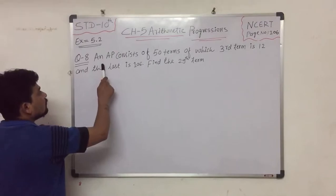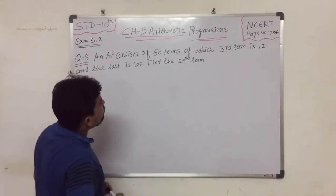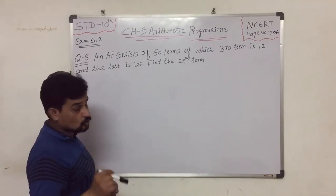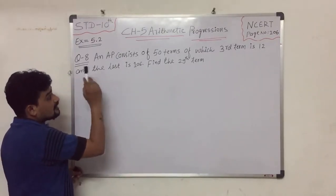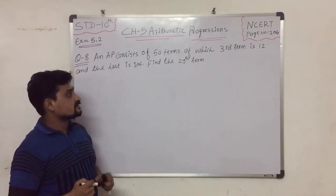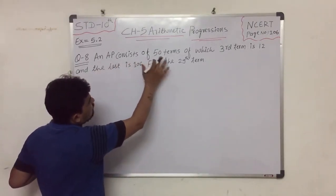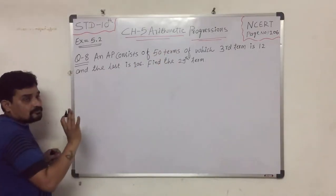Question 8 is: An AP consists of 50 terms of which the third term is 12 and the last term is 106. Find the 29th term. So first we have to read which data we have.